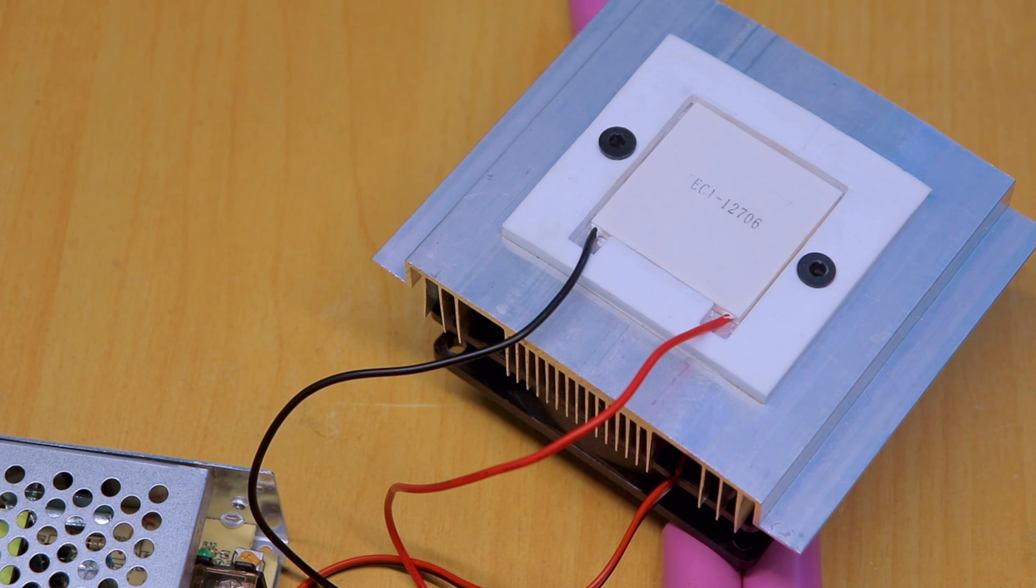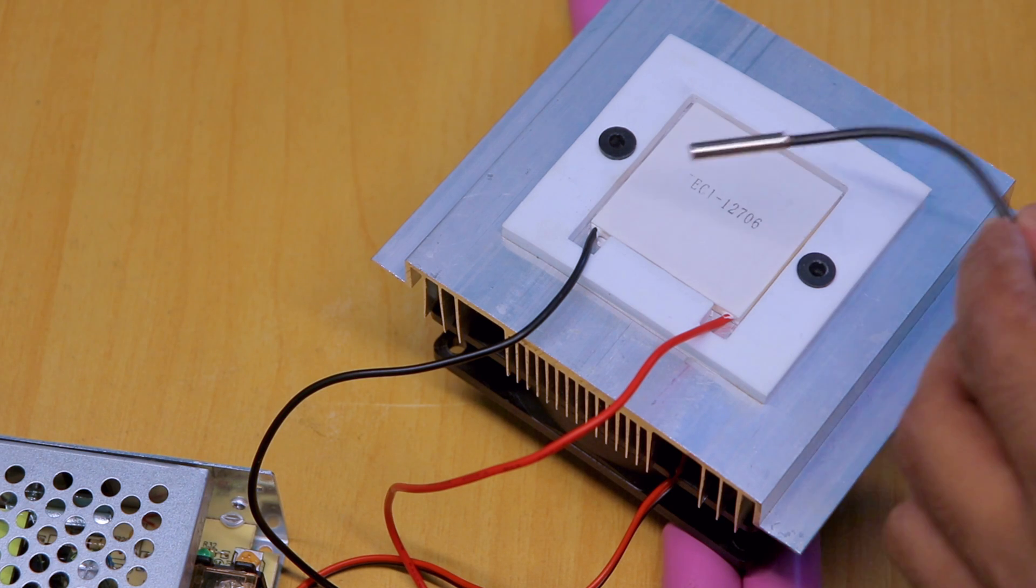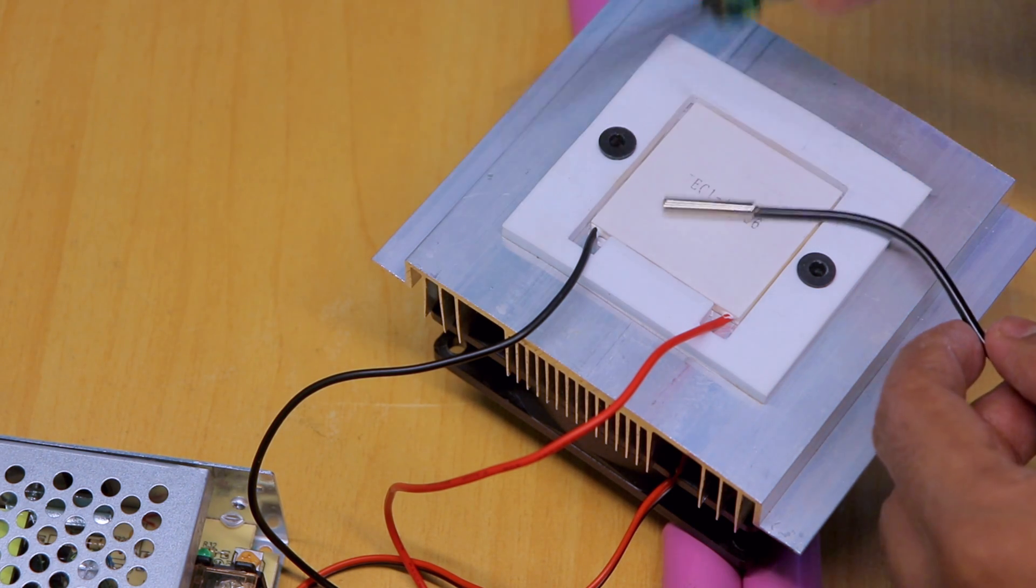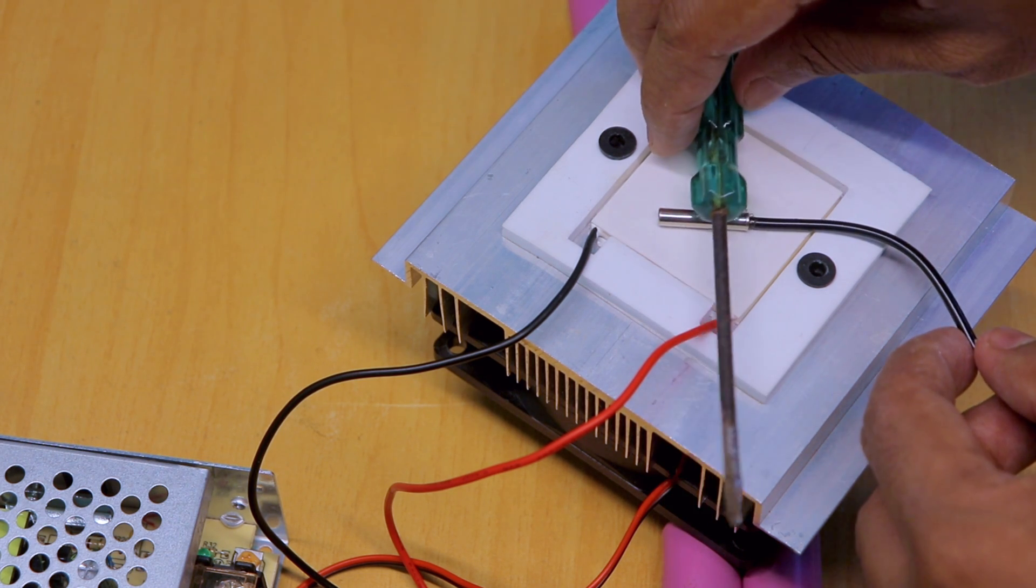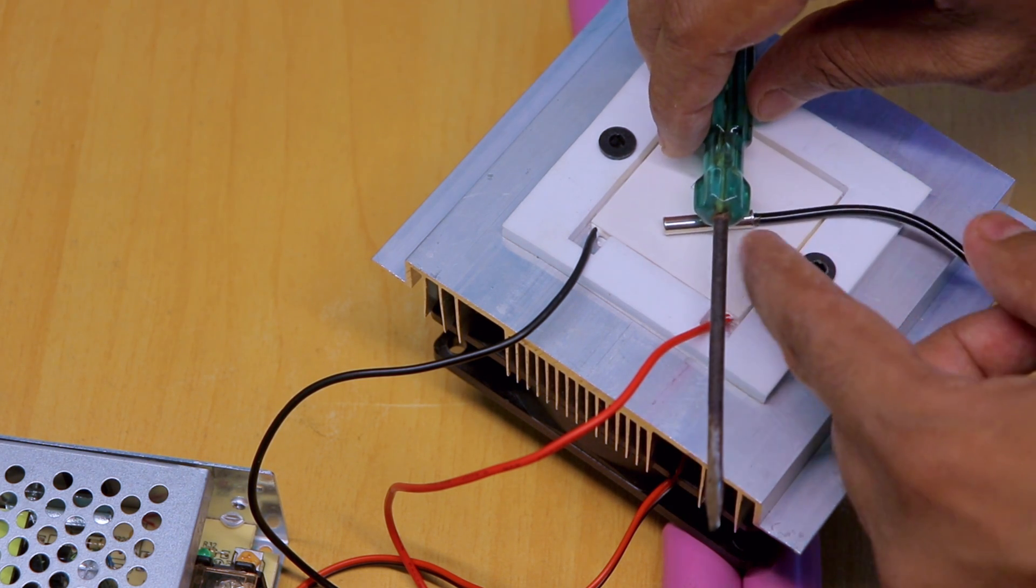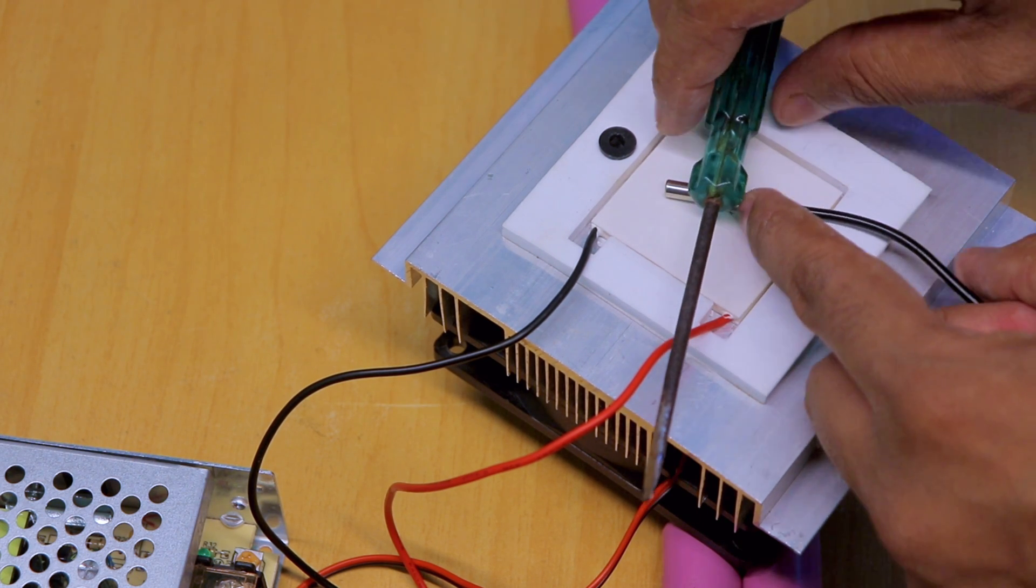So our testing setup is complete. Now test this Peltier module 12706. Here I am placing this temperature sensor probe on the cold side and here I am placing this screwdriver as a support for the temperature sensor probe.